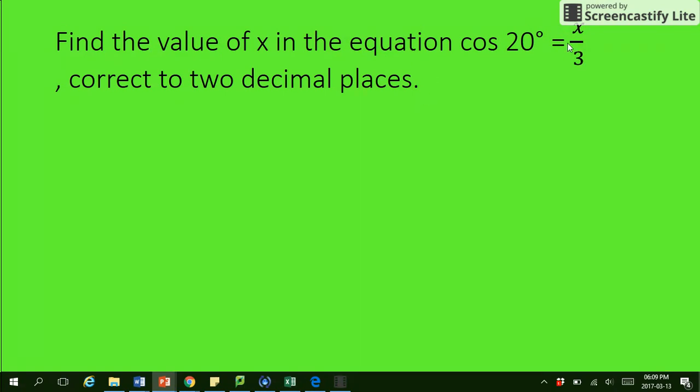Now, the first thing we have to do is we want that x on its own. So if we chuck that x over to the left and we bring the cos over to here, because we're moving that over, we're then going to multiply this cos by the 3. So I'll show you.